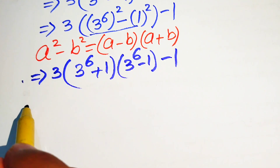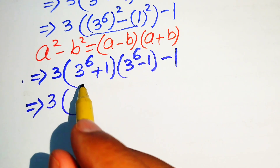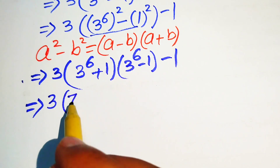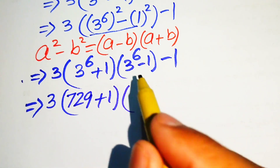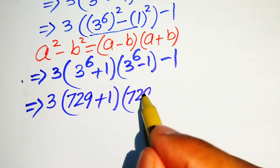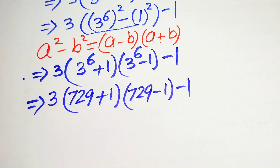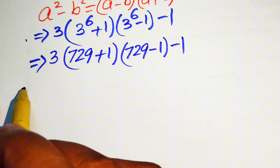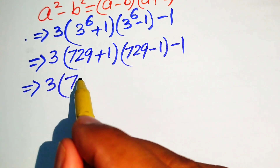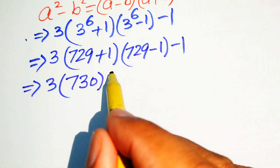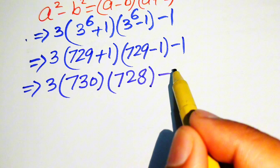We need a little simplification. We know that 3 to the power of 6 equals 729, so 729 plus 1 equals 730. Similarly, 3 to the power of 6 minus 1 equals 728. So we now have 3 times 730 times 728 minus 1.